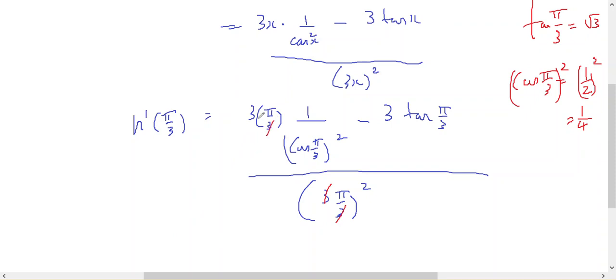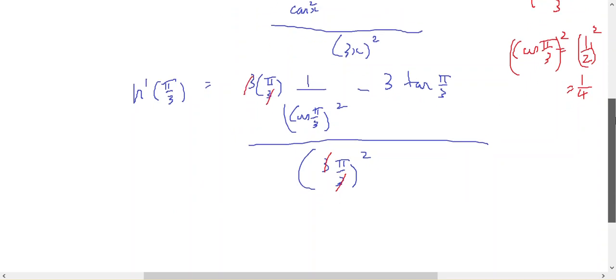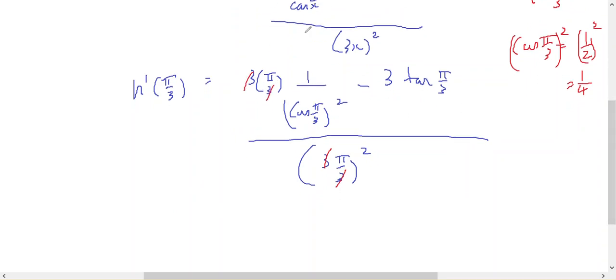So what have we got? The 3's cancel. So that's going to leave me with pi times 1 on 1 quarter minus 3 times root 3,